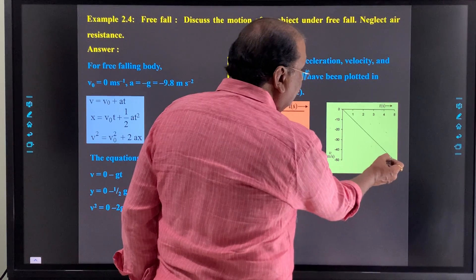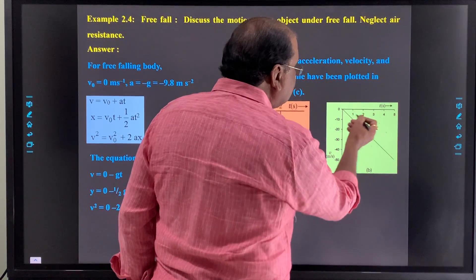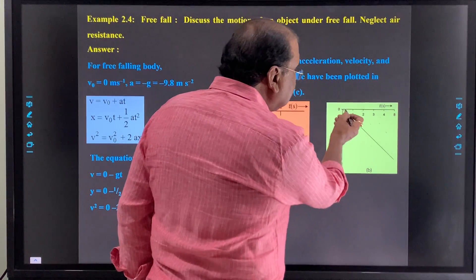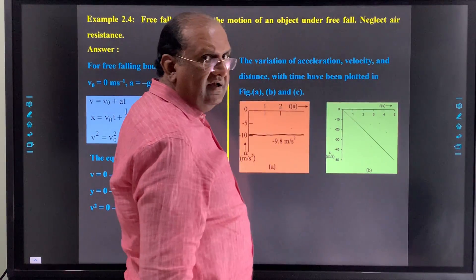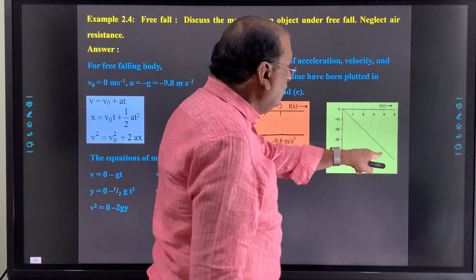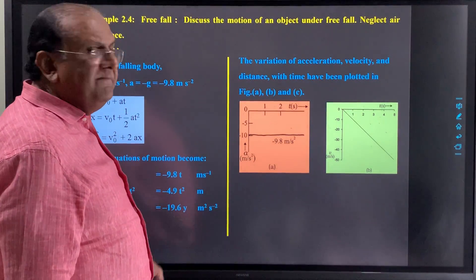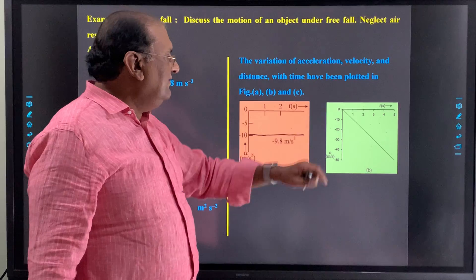Time is positive, velocity is negative, and it is a straight line graph. If you find the slope of this particular graph, slope will be 9.8. This is the velocity time graph.